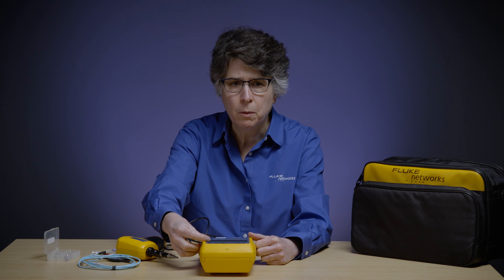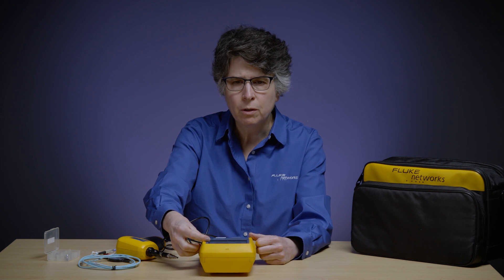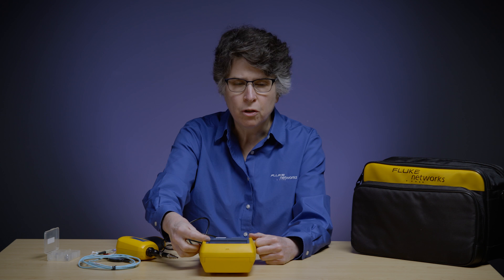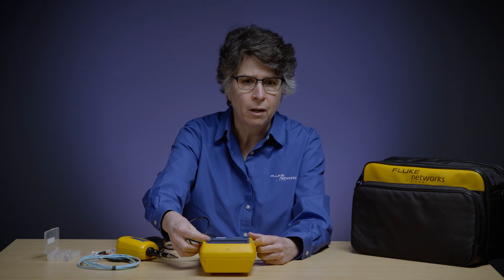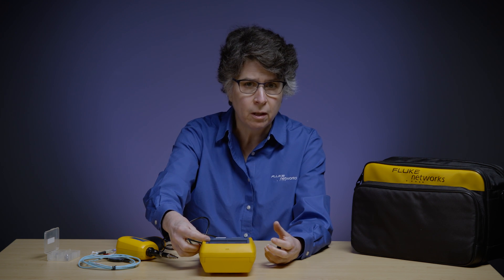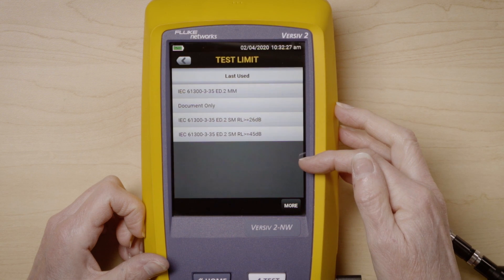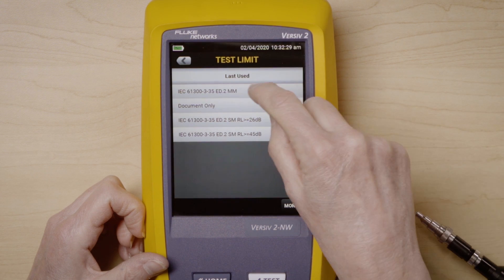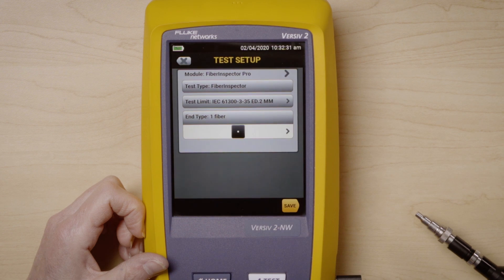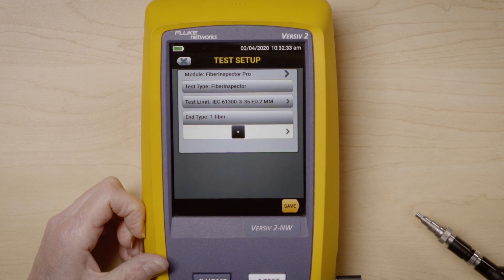We have test limits. By default, we use document only because most of the time when you're doing fiber inspection, you just want to know is this a proof of quality test. Is this fiber interface clean or is the fiber interface dirty? You do have the option of using different limits. And just for the heck of it today, we are going to use the IEC 61300-3 multimode limit. That's going to give us pass fail.